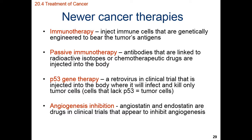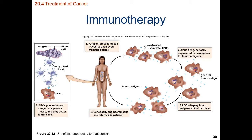And then finally, we have angiogenesis inhibition. Angiogenesis inhibition primarily focuses on making it so that the cancer can't have any blood vessels, arteries or veins, growing to supply needed nutrients to those cancerous cells. So if we can inhibit the growth of new blood vessels, the cancer will be starved of blood and potentially die off, or at least not grow.